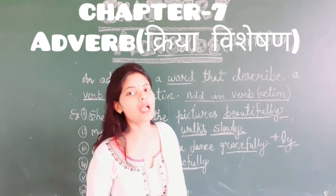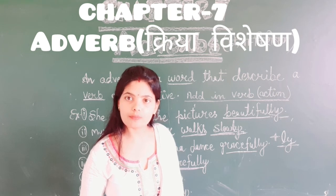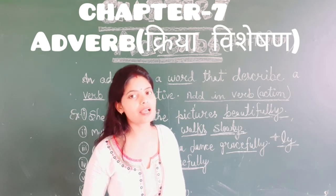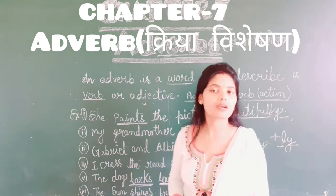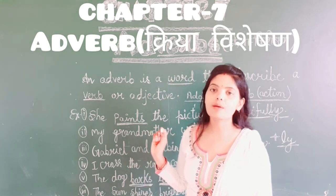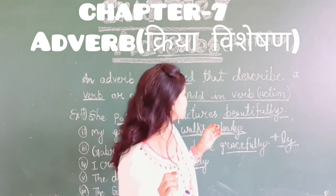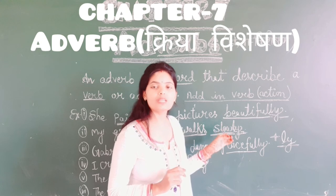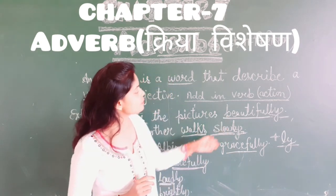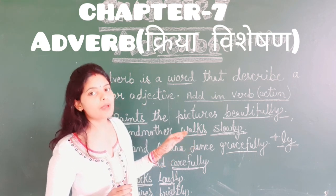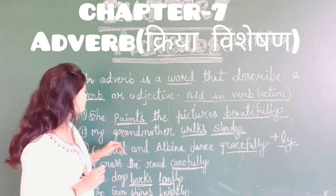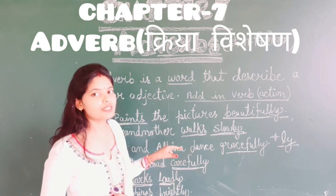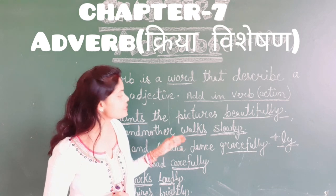Words that end with '-ly' are called adverbs. So if any word is given, you can understand what is an adverb. Like — she paints the picture beautifully, '-ly' is added here, so we can easily understand what is an adverb. My grandmother walks slowly — '-ly' is added, so slowly is an adverb.